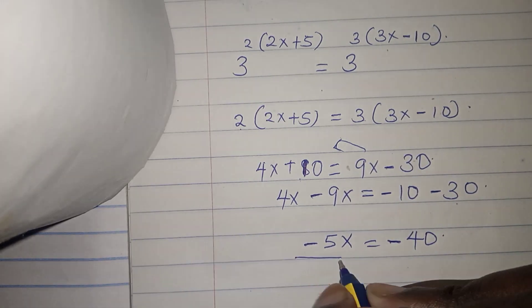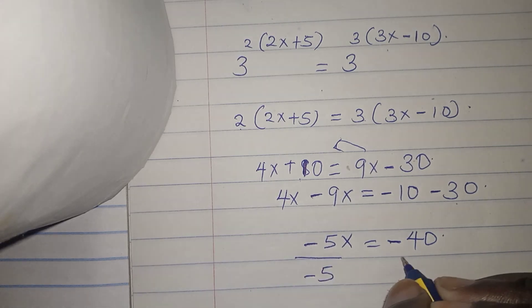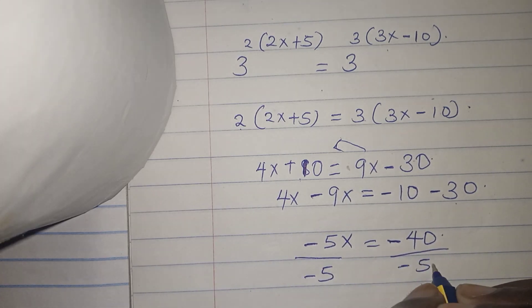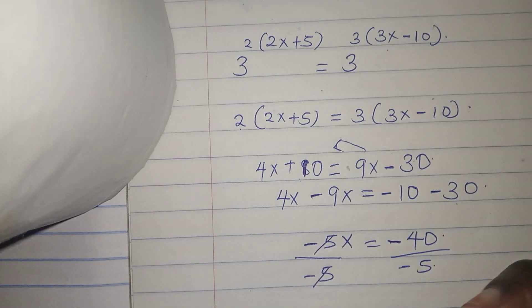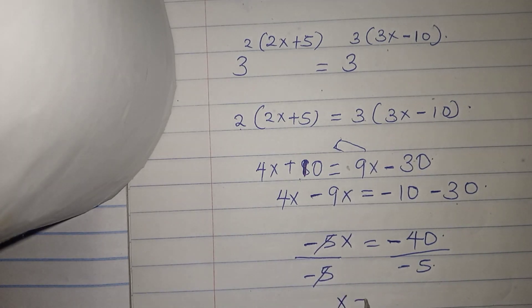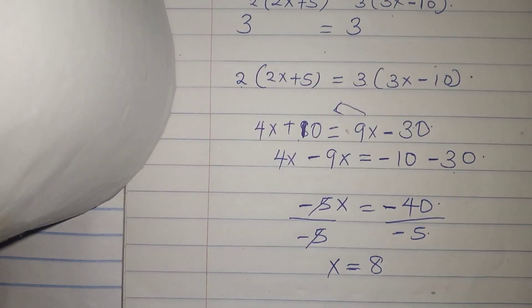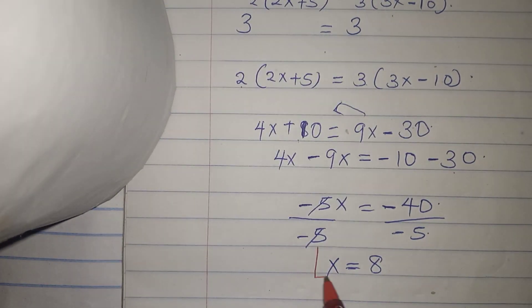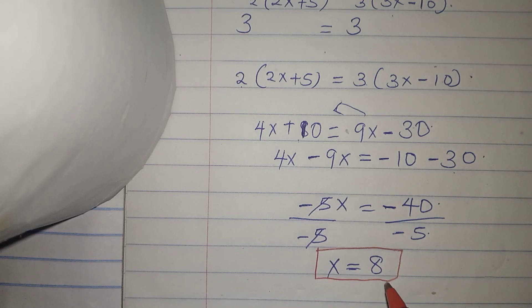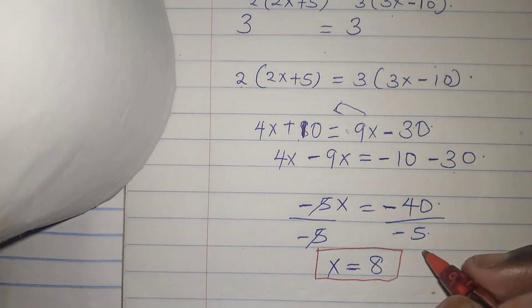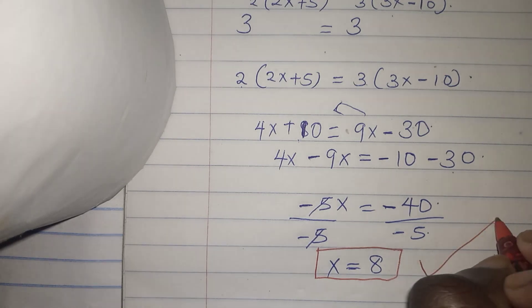So to isolate x, I'll divide by negative 5 on both sides. This will cancel and I'll remain with x equals 8 as our final answer. You can confirm whether x satisfies the above equation, but x equals 8 is our true solution.